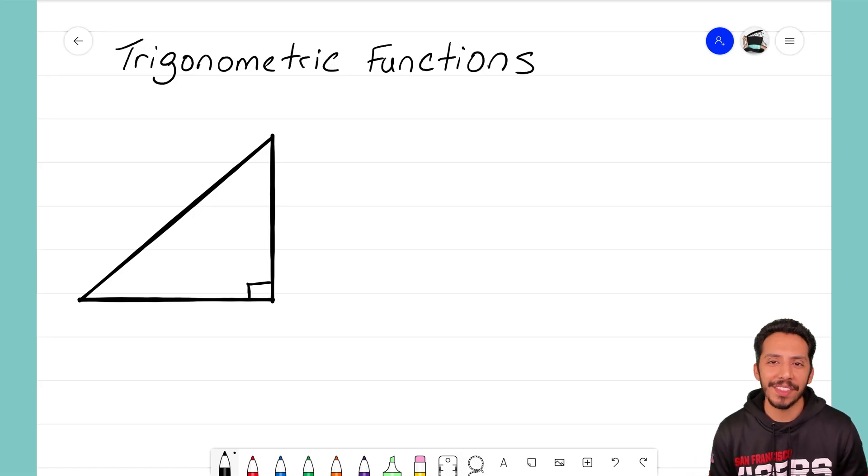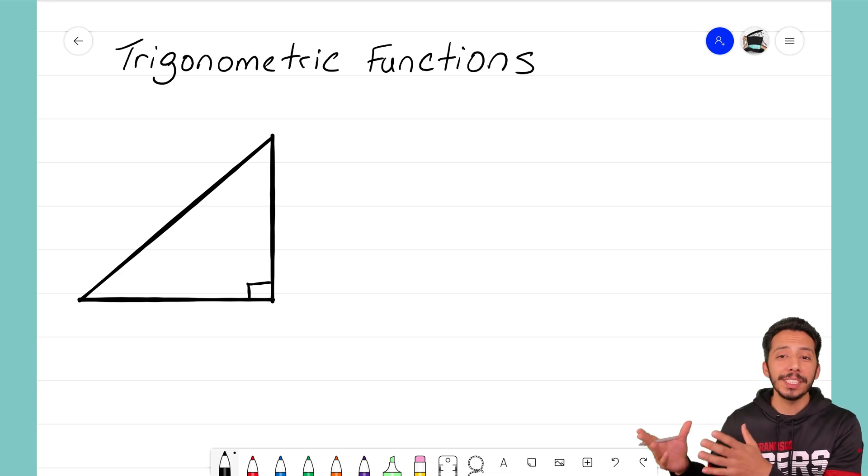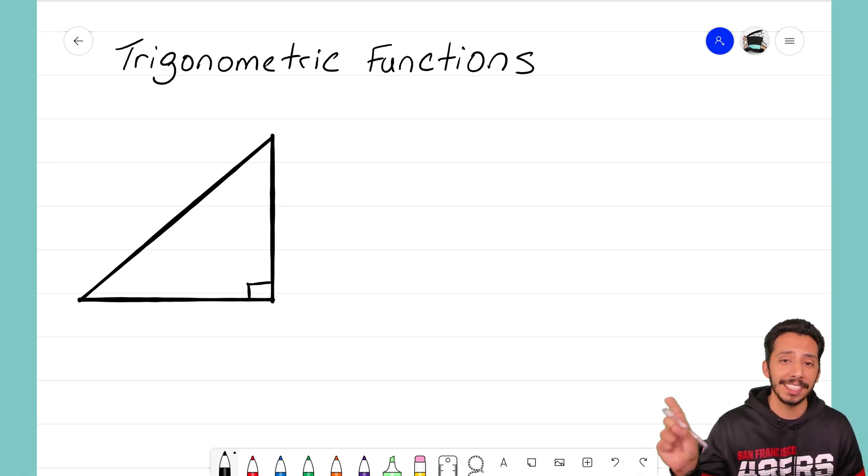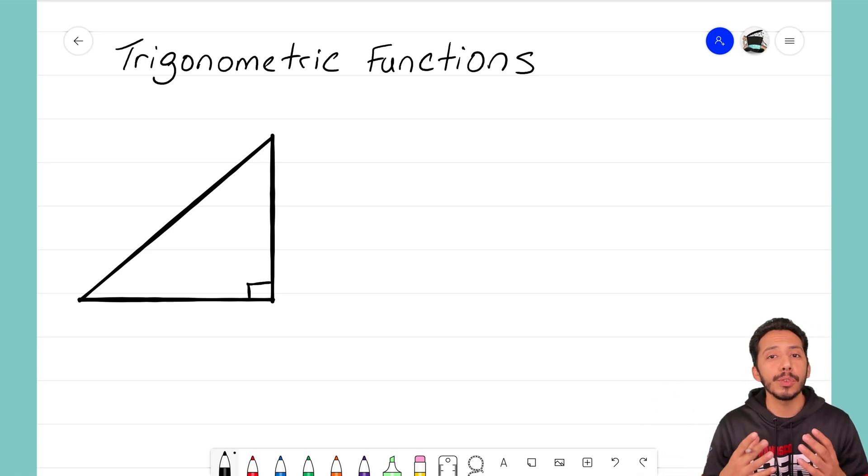Hey everyone, it's that Math Magician. In this video we're going to summarize the three trigonometric functions that we can use to help us solve for unknown sides on a right triangle. What we've got to do first is label all the sides on that triangle, and then we can write out our three functions.